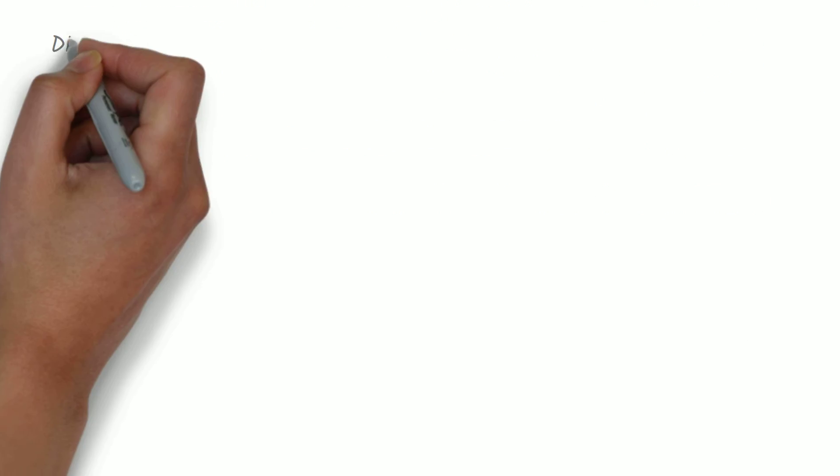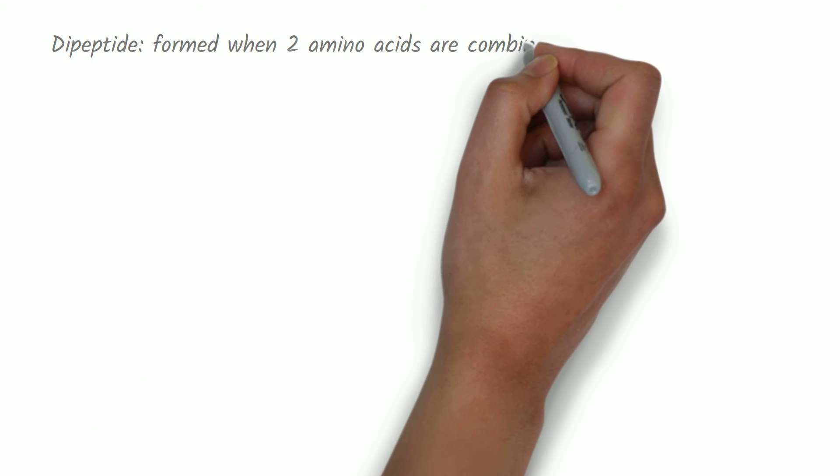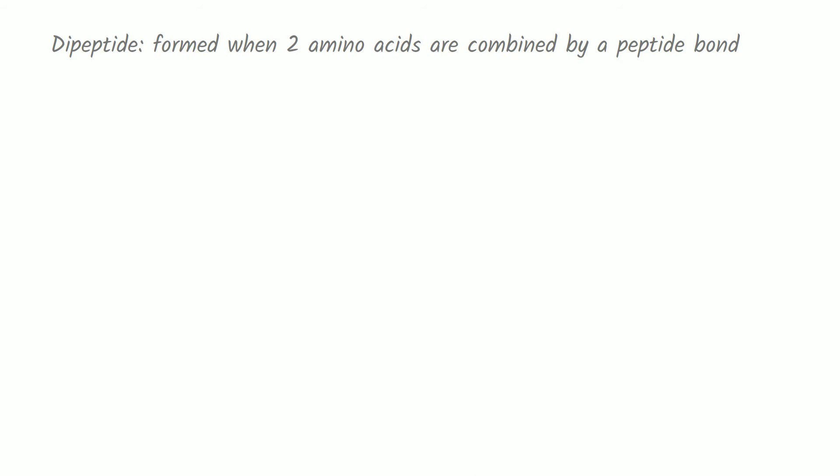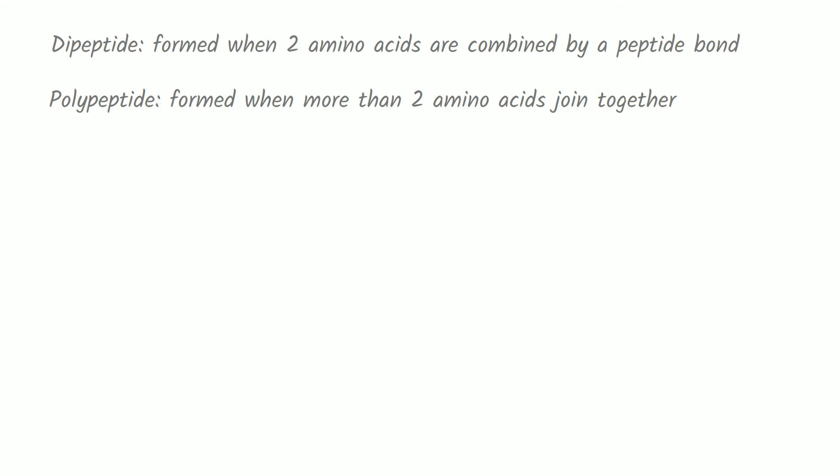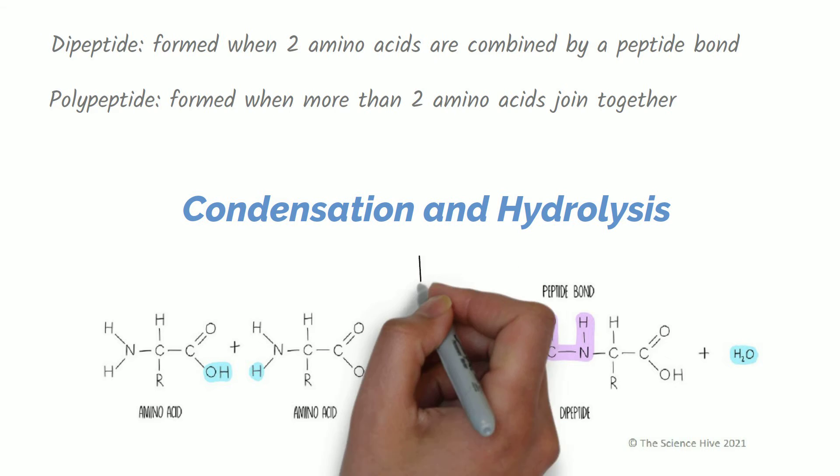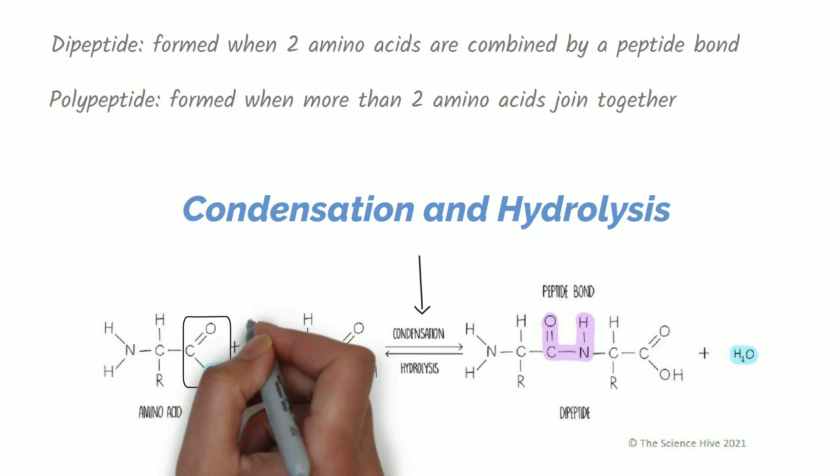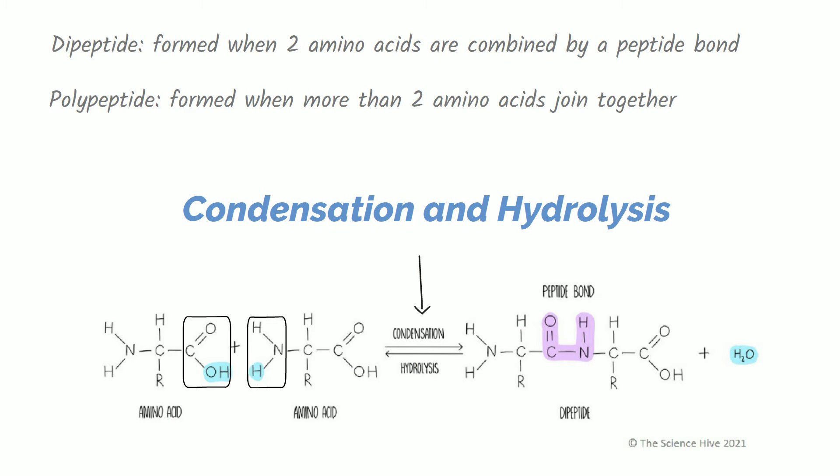Dipeptides are formed when two amino acids join together. Amino acids are linked together through a condensation reaction between the hydroxyl group of one amino acid and a hydrogen from the amine group of a nearby amino acid. The reaction results in the loss of water and the formation of a peptide bond. This reaction is reversed in digestion in a reaction called hydrolysis.